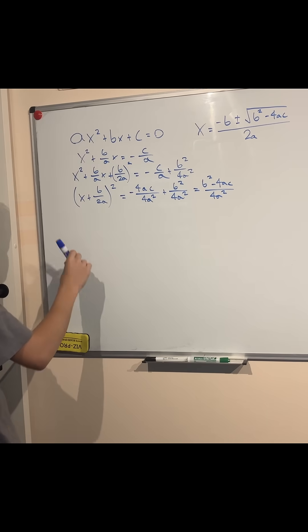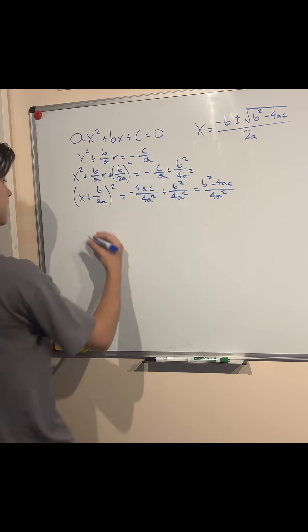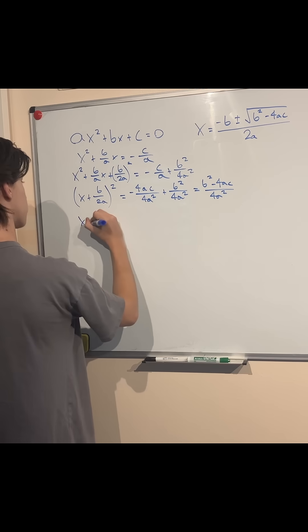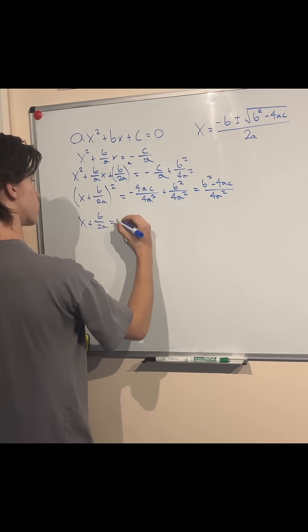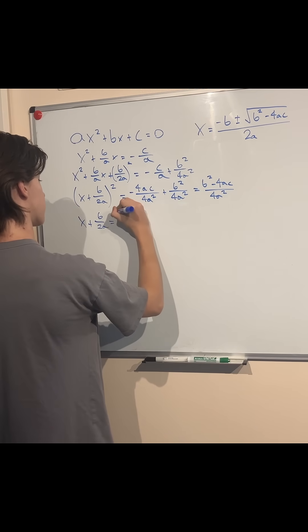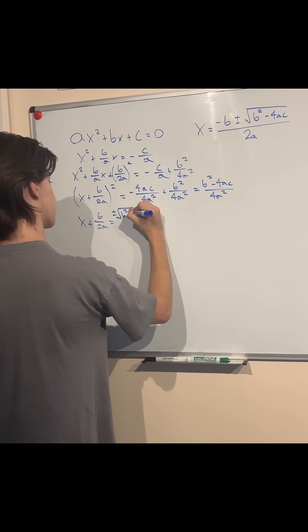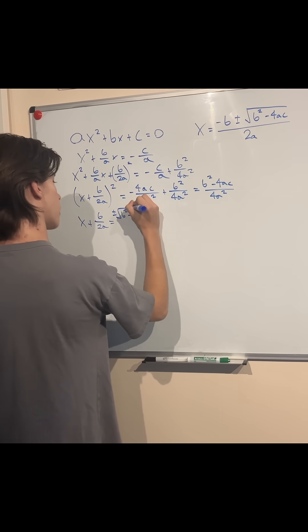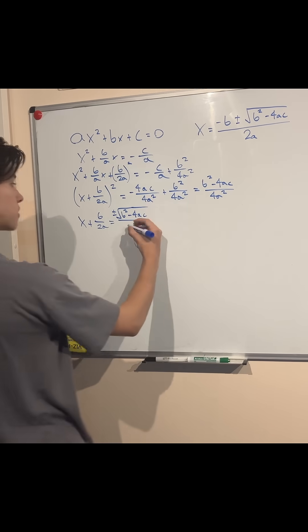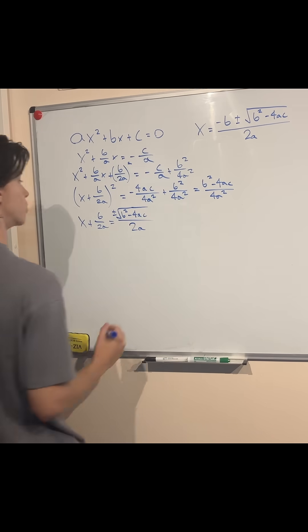And now finally, we can do our move of taking the root of both sides. We get that x + b/2a is equal to the positive and negative root of b² - 4ac over here. This is already a perfect square. We take the root of that, that is 2a.